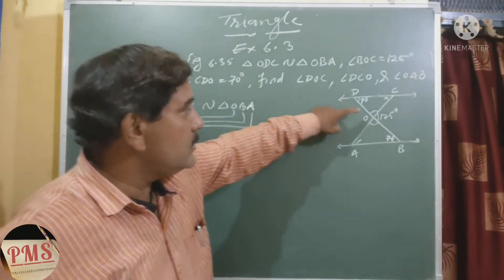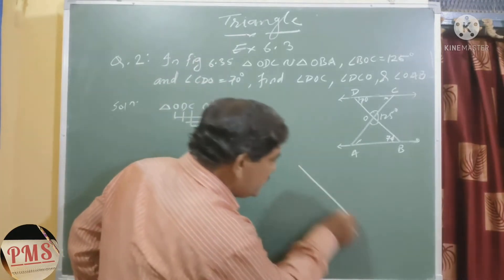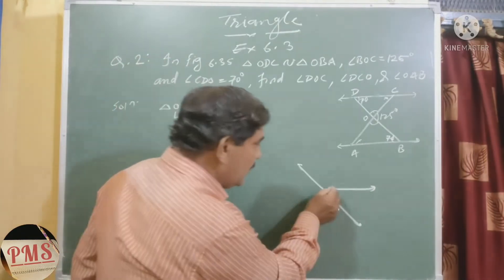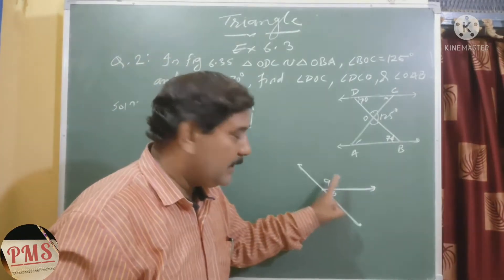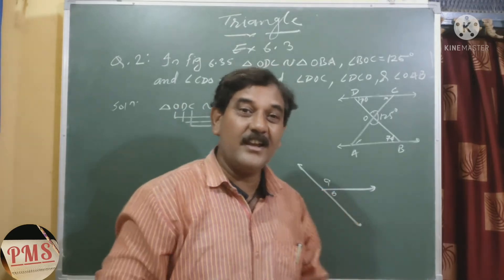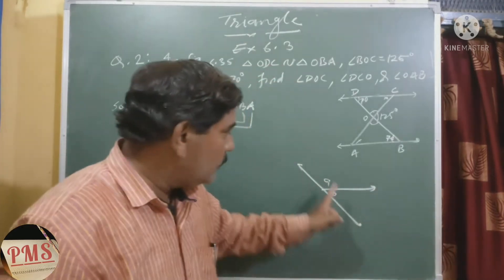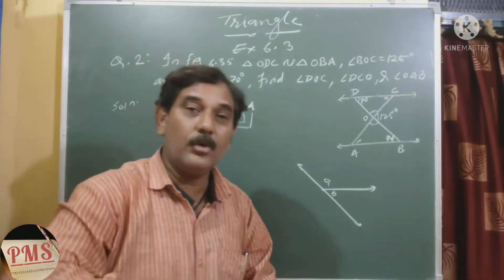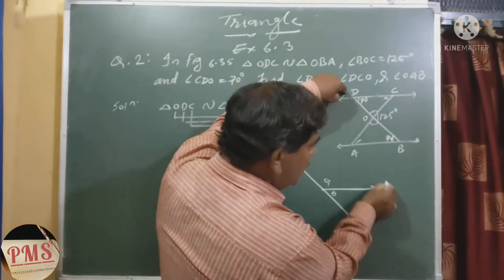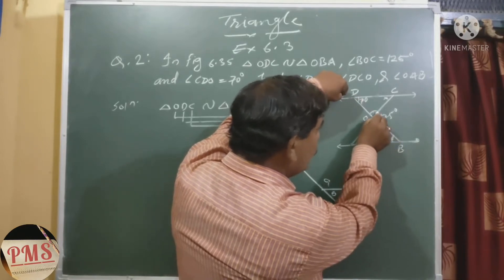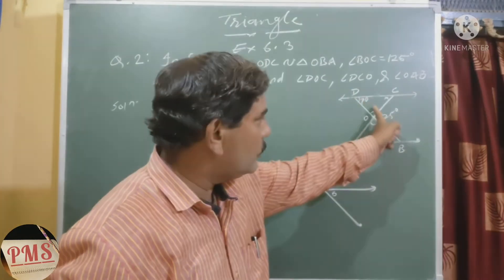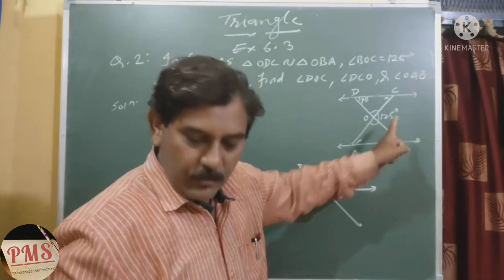Now, DB is a straight line and OC is intersecting it, dividing it into two parts. So the two angles formed are a linear pair and must sum to 180 degrees. Therefore, angle DOC plus angle COB equals 180 degrees. Since angle COB is given as 125 degrees, we have angle DOC plus 125 equals 180.